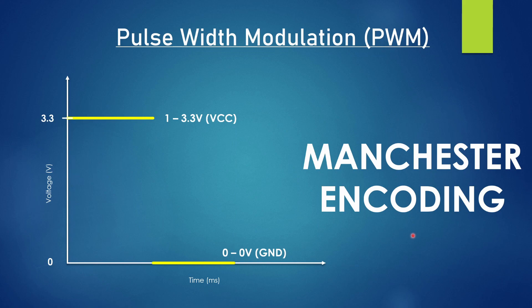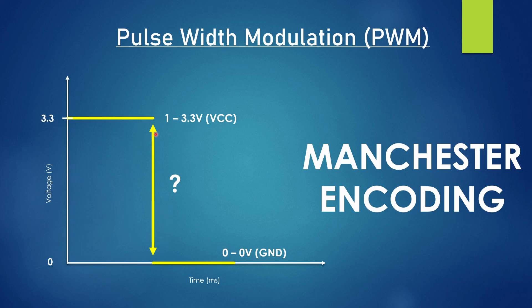When you think of embedded systems and digital input and output, typically you're thinking of what we call Manchester encoding. Manchester encoding is this idea of ones and zeros — the ones being high at 3.3 volts or VCC, and the zeros being down at ground. The question is, how do I actually transmit or communicate a value in between there without a digital-to-analog converter? Those pieces of hardware are typically fairly expensive. For example, the Raspberry Pi Pico can't put out an analog signal — so how do I communicate something that isn't 3.3 or zero volts?